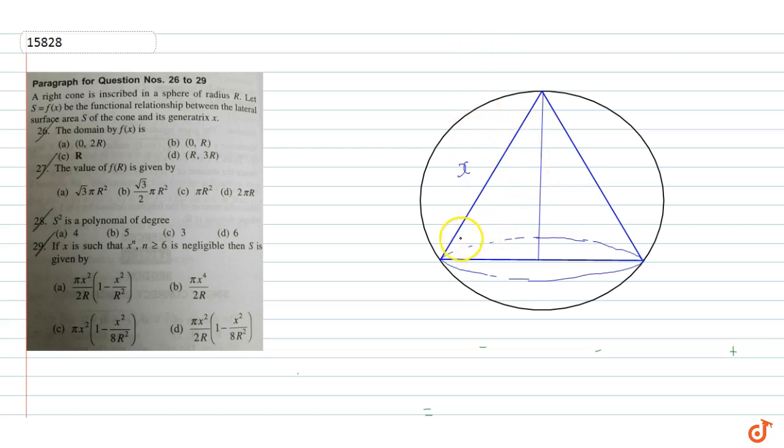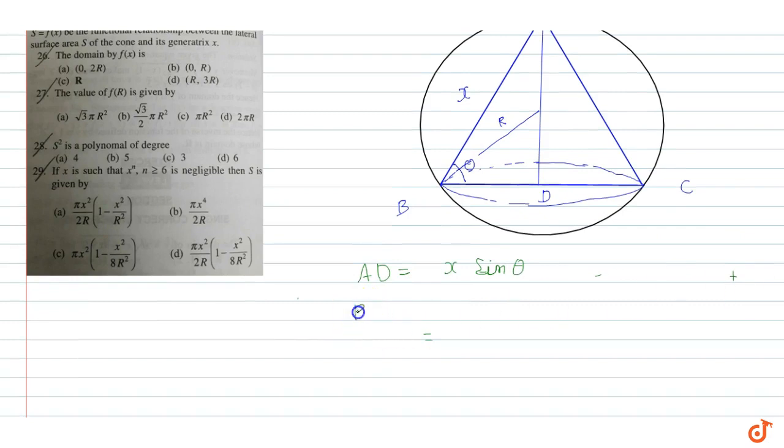First we say that the angle is theta. So we have a sphere, and in this sphere we have a cone drawn. The cone is inside a sphere of radius r. This point is A, this point is B, this point is C, and this point is D. So AD is equal to x sin theta, and similarly BD is equal to x cos theta.